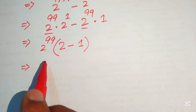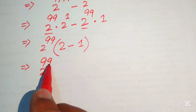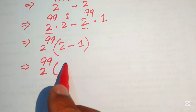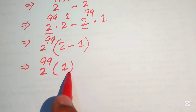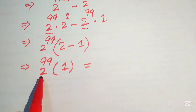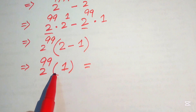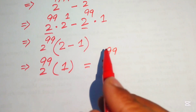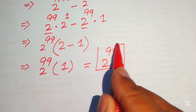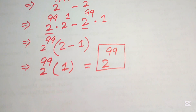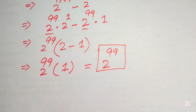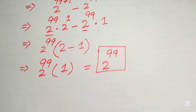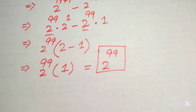If we subtract 2 minus 1, it equals 1, so we get 2 to the power of 99 multiplied by 1, which gives us 2 to the power of 99. This is the final simplified form of the given algebraic expression. Thank you so much for watching this video — please subscribe to my channel for more exciting videos.